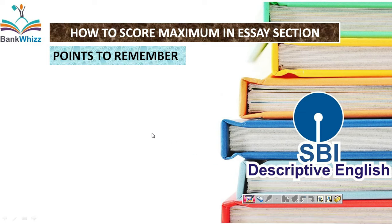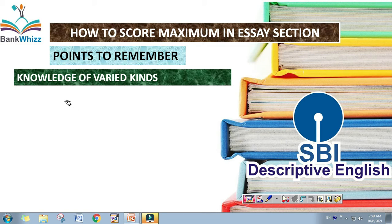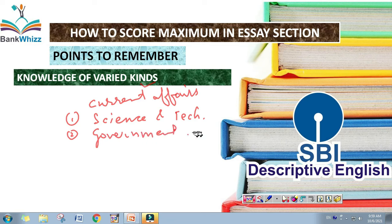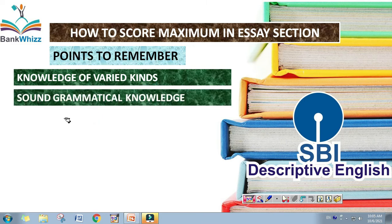The first point to remember is that you should have a sound knowledge of varied kinds and you should be good at current affairs. In current affairs, you need to study: first, science and technology; second, government schemes — for example, Atmanirbhar Bharat and similar initiatives; and third, social and economic affairs.